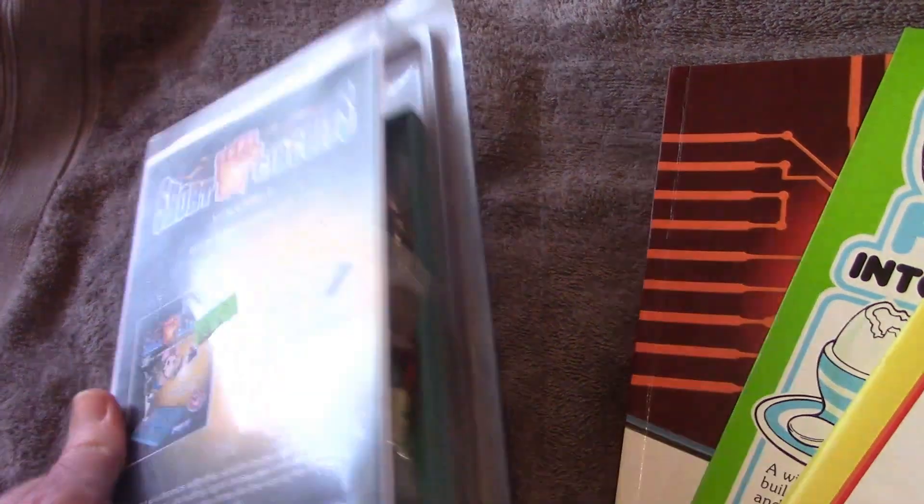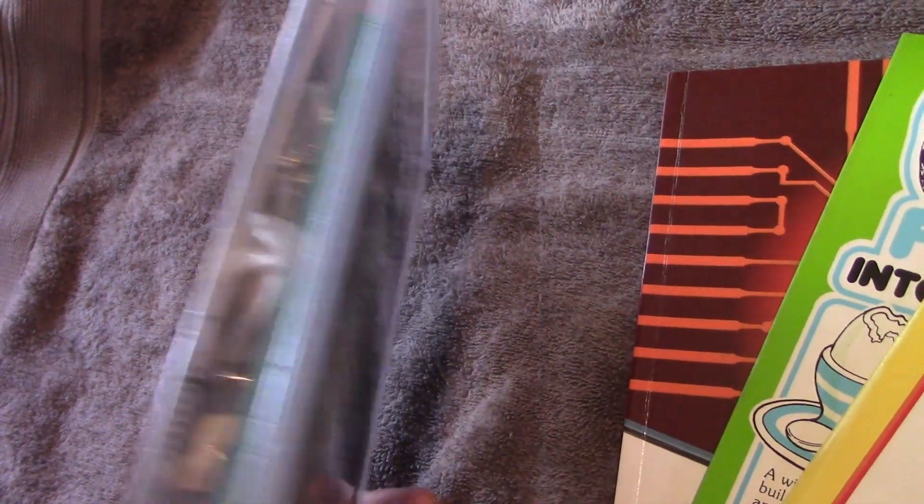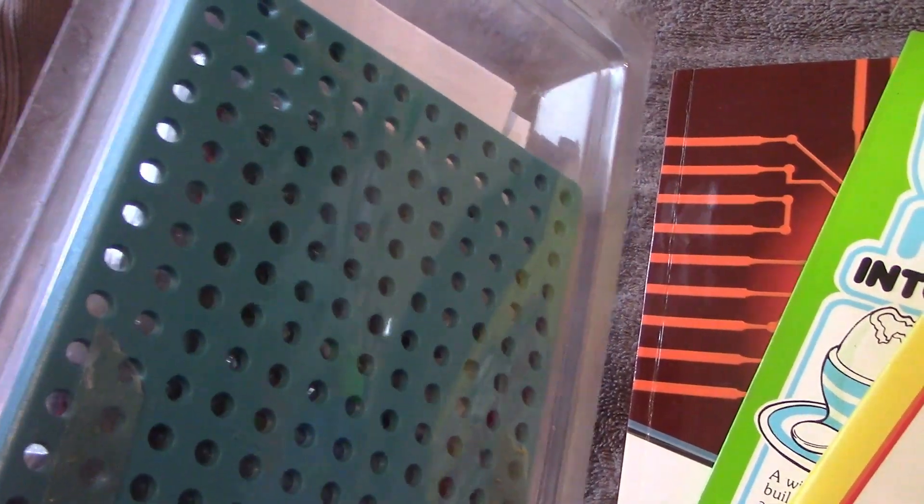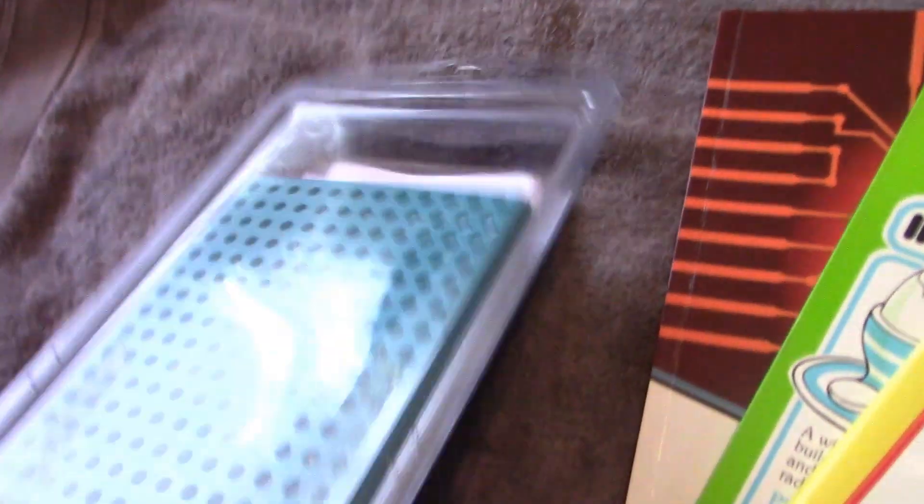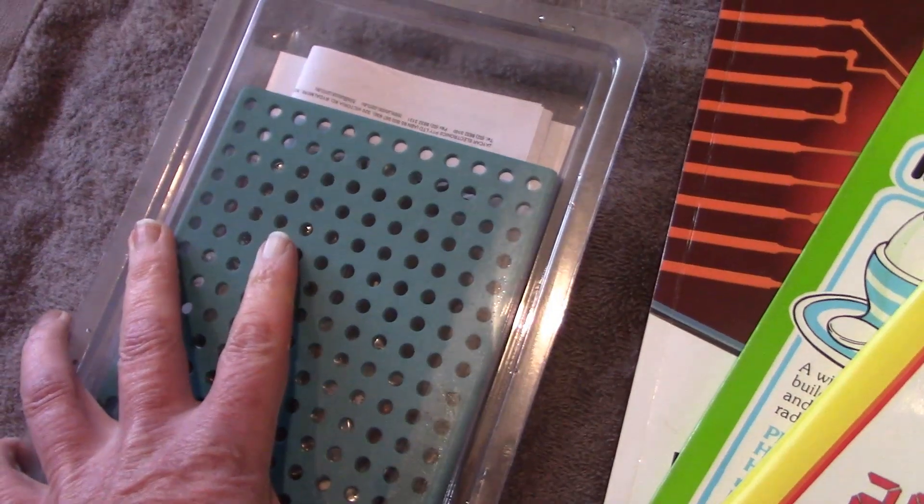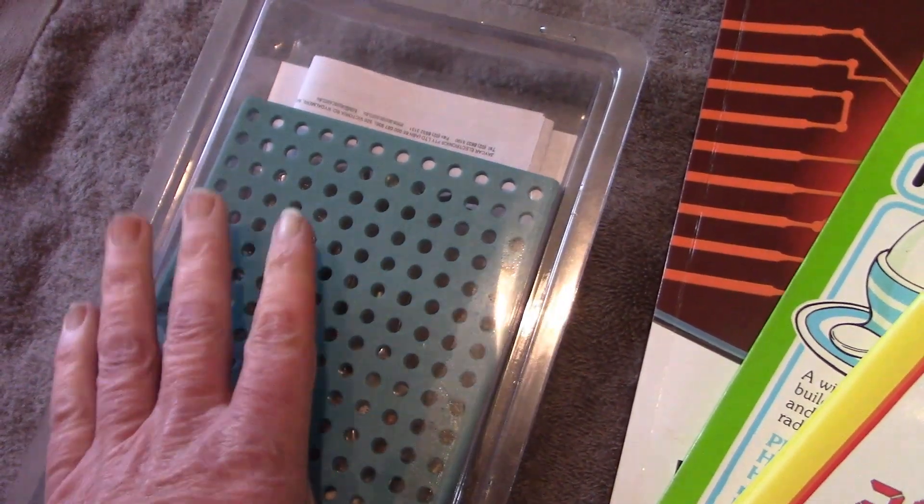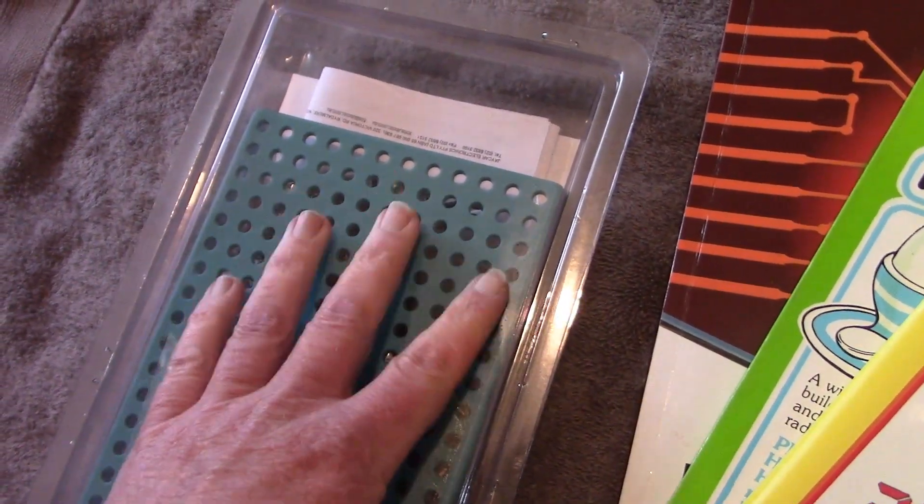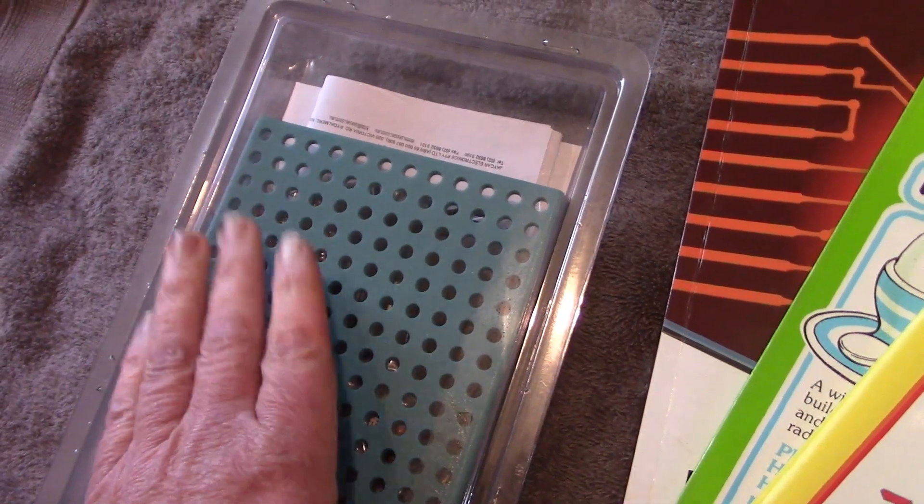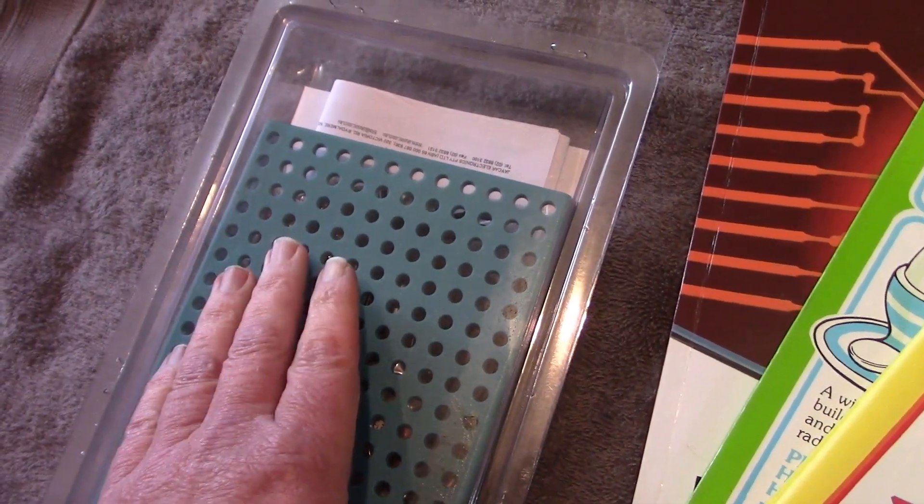It comes with the components, a plastic board because this is solderless and attached to it, though not in the item I got, was a book that had all the instructions for building the circuits.